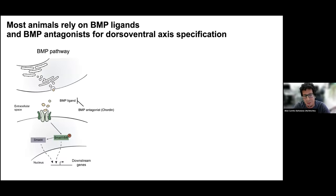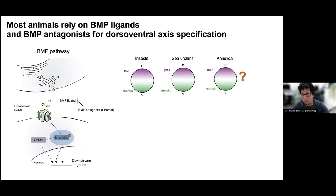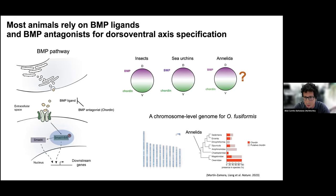The BMP pathway involves a secreted ligand that binds to a receptor, and this ligand can be targeted by an antagonist — one of the main ones is chordin. The main effector is a protein called SMAD1/5A. How the ligand and the antagonist play off each other to set up the SMAD gradient is very important for DV axis specification in the majority of animals studied, but weirdly, not in annelids. The reason is that annelids have lost the main antagonist, chordin, at least in the ones that have had genome sequences so far. We recently sequenced the Owenia genome at chromosome level and found chordin. We then did a screening of transcriptomes available — more than 70 — and found that chordin is prevalent in many, many species. It was just by chance that the previously sequenced genomes didn't have it.